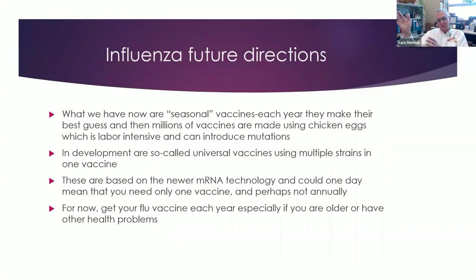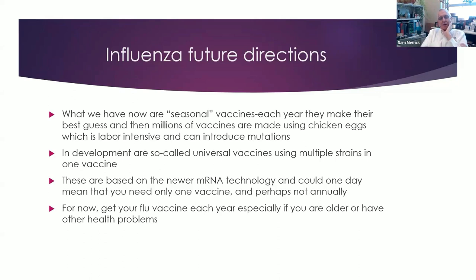They use chicken eggs to develop the flu vaccines — it's labor-intensive and you can get mutations when they grow in the eggs, so every year it's a huge rush to guess what will be circulating in the fall and to produce enough vaccines. Progress has been made in developing so-called universal vaccines using multiple strains and parts of the virus in one vaccine. Some of the newer mRNA technology developed for COVID vaccines could someday mean you need only one vaccine that's the same every year and you may not even need it every year. There's some optimism that can happen in the next few years.